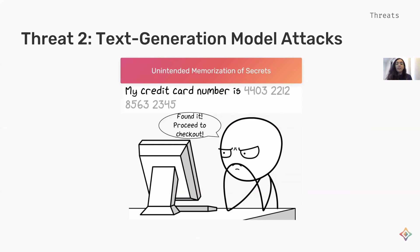Now let's assume that we have a text generation model trained on private data. Sensitive information can be memorized in the model and inferred from the model's output. For example, if a text generation model has memorized the credit card number of one of the data contributors, a user of the model might be able to extract this by writing a sentence such as 'my credit card number is' and then waiting for the autocomplete to reveal it.